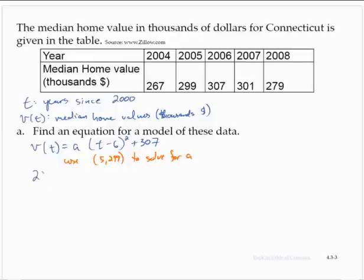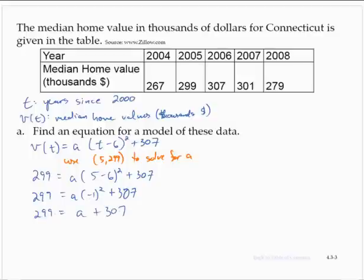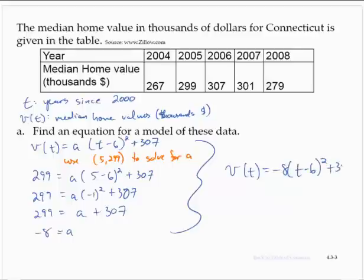So then 299 would equal a times 5 minus 6 squared plus 307. So 299 would equal a times negative 1 squared plus 307. 299 would equal, well, negative 1 squared is 1, so 1 times a is a, a plus 307. Subtract the 307, and a is negative 8. So putting that all together to revise the model, v of t is negative 8 times t minus 6 squared plus 307.